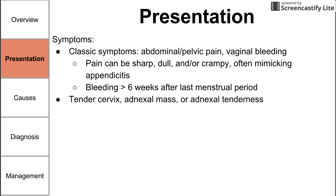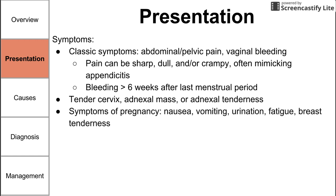Other symptoms include a tender cervix, an adnexal mass found on physical exam, or adnexal tenderness. You might also see symptoms of pregnancy — because this is a pregnancy, just in the wrong location — including nausea, vomiting, increased urination, fatigue, and breast tenderness, which are usually the result of high HCG in the body.